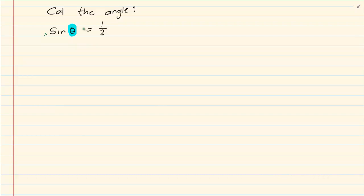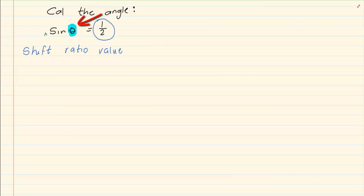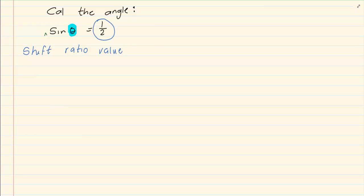When you are told to calculate the angle, the calculator work is shift, then the ratio, then the value. The amount that is over the equal-to sign in your equation we're going to call the value. The amount that is next to your ratio is called the angle. So you press shift, the ratio, and the value — in this case, shift, sin, and the value.